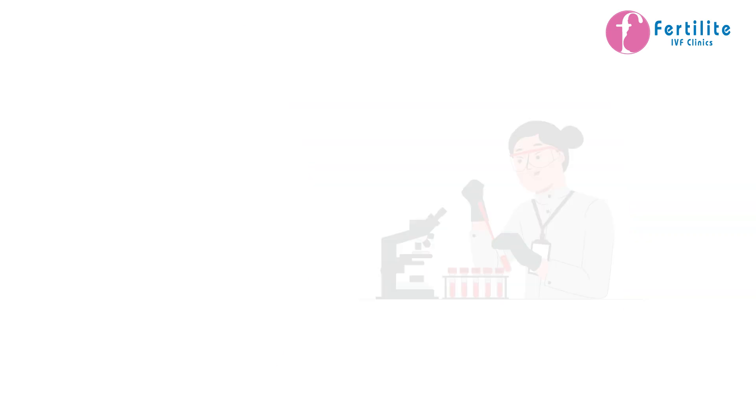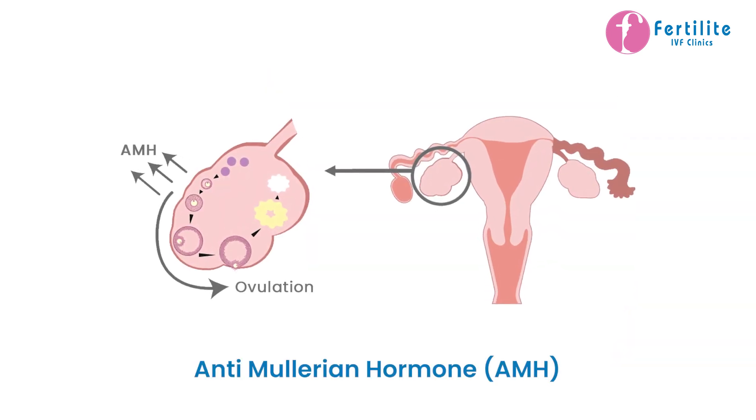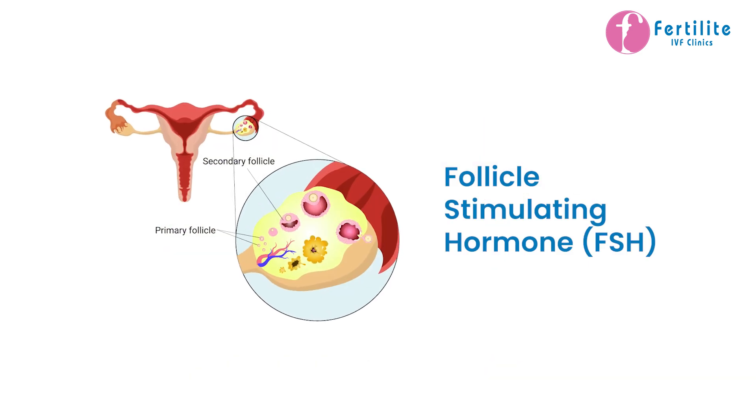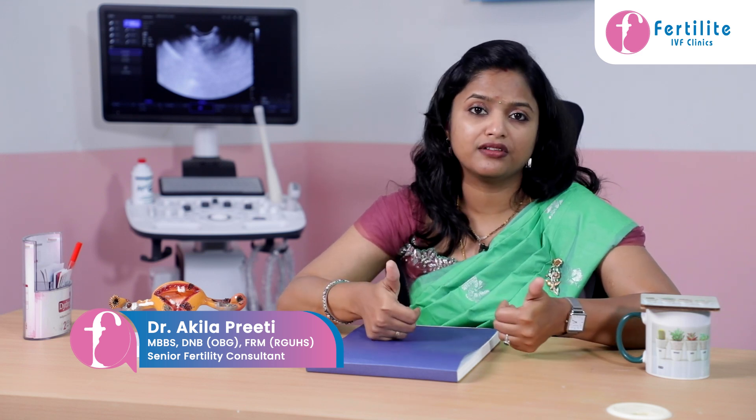The basic tests we do to assess ovarian reserve are one hormonal test and the second is a transvaginal ultrasound. When I talk about hormonal tests, the two major hormones we look for are anti-Mullerian hormone and follicle stimulating hormone. Anti-Mullerian hormone can be done any day during a menstrual cycle — it's not related to the cycle. This hormone is secreted from the smaller follicles present in the ovary. Higher the AMH, better is the ovarian reserve; lower the AMH, lesser is the ovarian reserve.